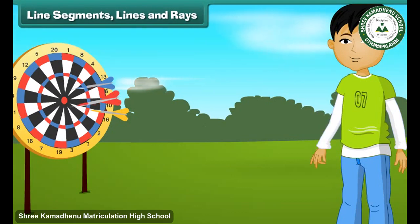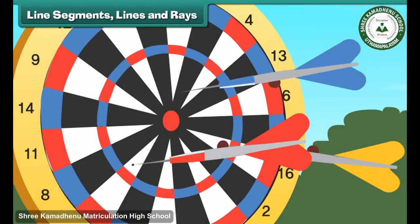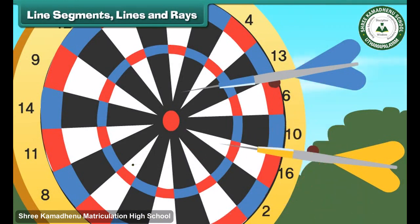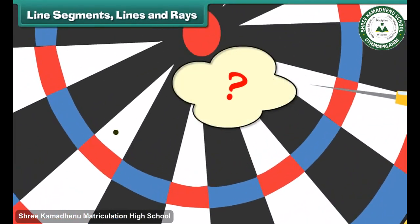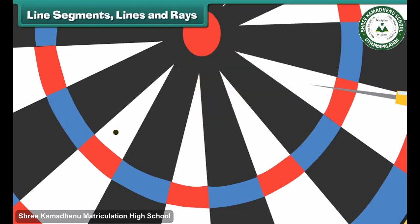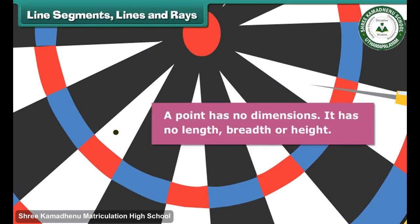Rahul perfects his aim by throwing darts at the dart board. Here is one such dart. Let us remove it. What do we observe? The dart has left a mark on the dart board. The mark is called a point. A point has no dimensions — it has no length, breadth or height.